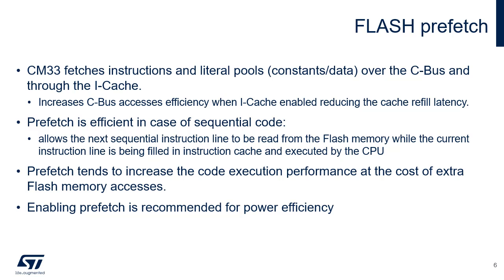Here are some performance metrics expressed in CoreMark per MHz. Performance when iCache is off and pre-fetch is off is 2.2. Performance when iCache is off and pre-fetch is on is 2.7. This illustrates the performance increase thanks to pre-fetch in the case of a cache miss. As CoreMark code is entirely in iCache with no cache miss after the first iteration, the pre-fetch has no impact on the CoreMark score when iCache is enabled.